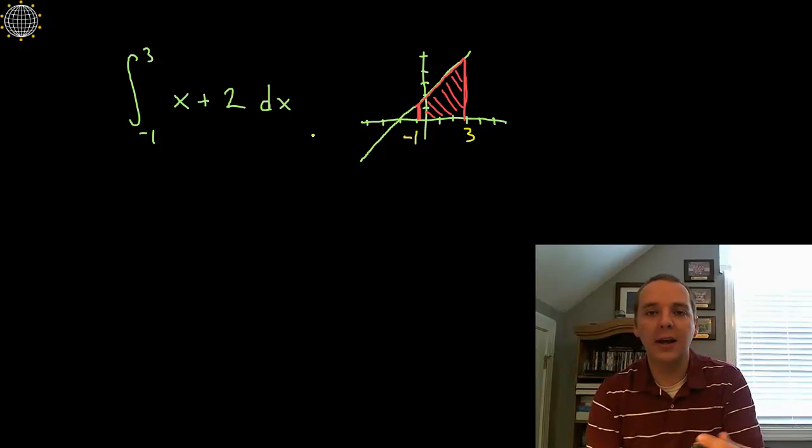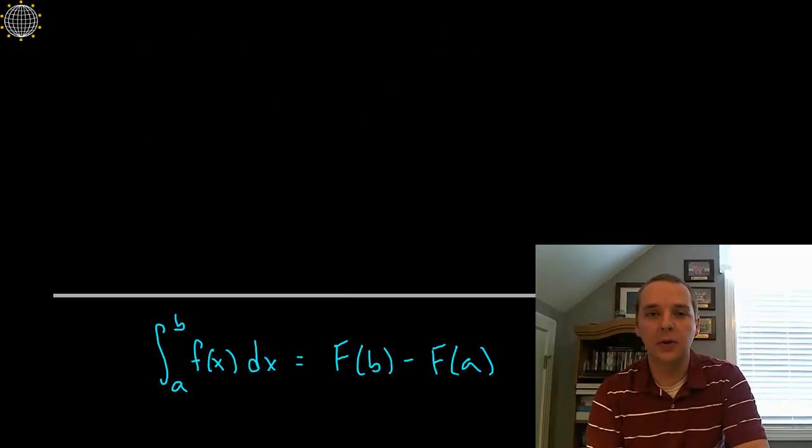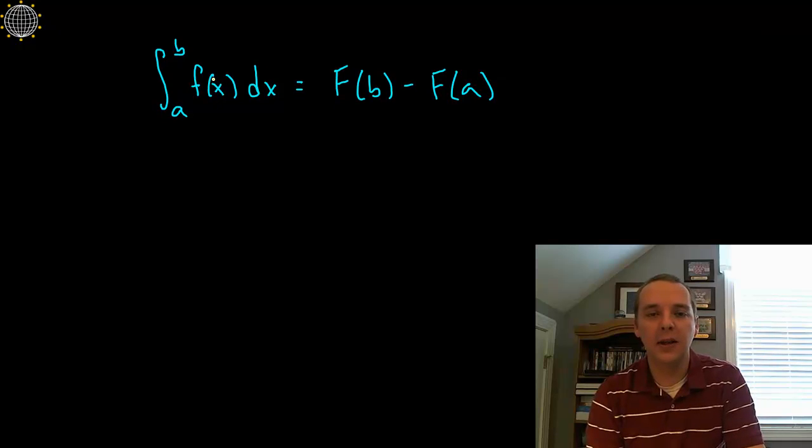So we learned a great calculus way to do this in the last video called the fundamental theorem of calculus. And just a quick reminder, here's what it says in short. It says if you want to find the area under f of x from a to b, what you have to do is find the anti-derivative of little f and plug in the terminal point minus the anti-derivative of f where you plug in the initial point and subtract those two, and then that's the area under the curve.